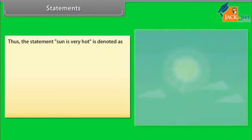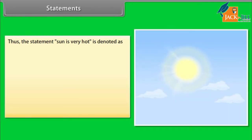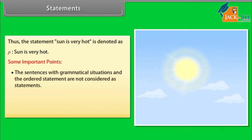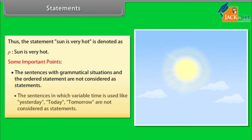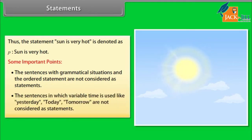The statement 'sun is very hot' is denoted as P: sun is very hot. Some important points: sentences with grammatical ambiguities and ordered statements are not considered as statements. Sentences in which variable time is used, like yesterday, today, tomorrow, are not considered as statements.